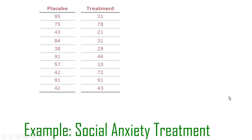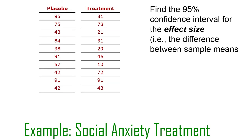So here's this example again with social anxiety treatments. Find the 95% confidence interval for the effect size. Here's the means and the standard deviations. The means are 68.44 and 45.44, and the standard deviations are 23.48 and 28.24. So find that confidence interval. You know how to do this — see if you can work this through, even if it takes you an hour. You'll learn a lot about how to do this if you work this through before you see the answer.